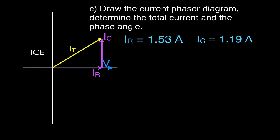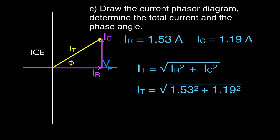We can use the Pythagorean theorem to get the total current — the length of that hypotenuse. That's a² + b² = c², so the total current equals the square root of the resistor current squared plus the capacitor current squared. Plugging in the values, we get a total current of 1.94 amperes. The next step is to get the phase angle — the angle between the total current and the voltage.